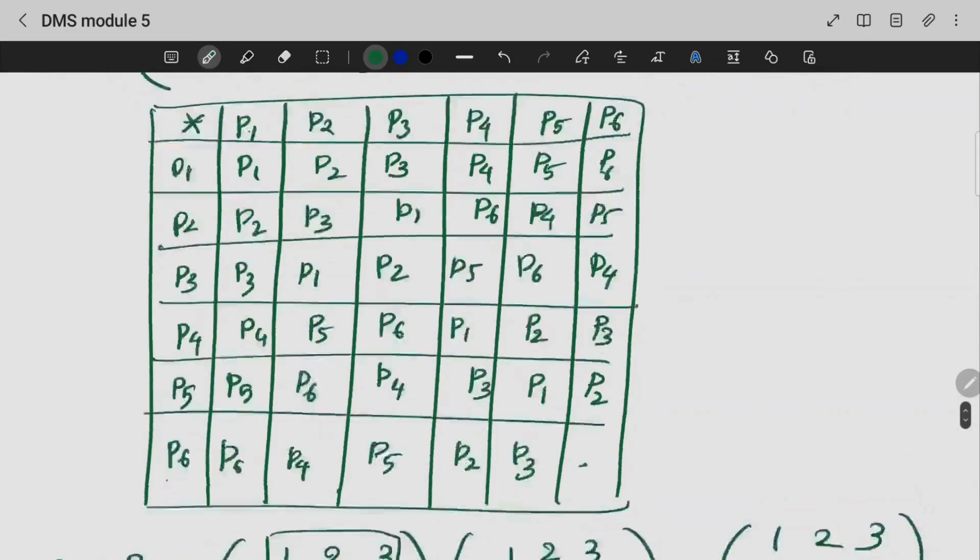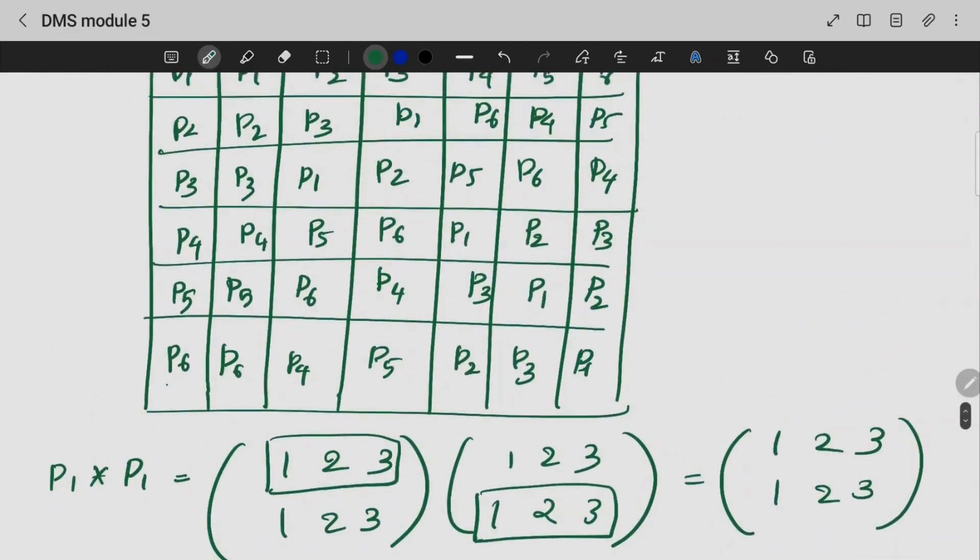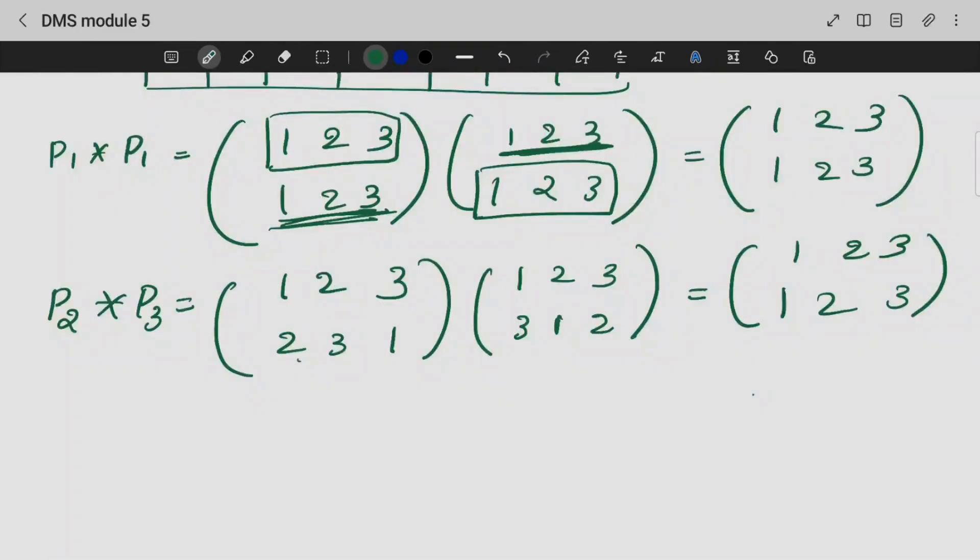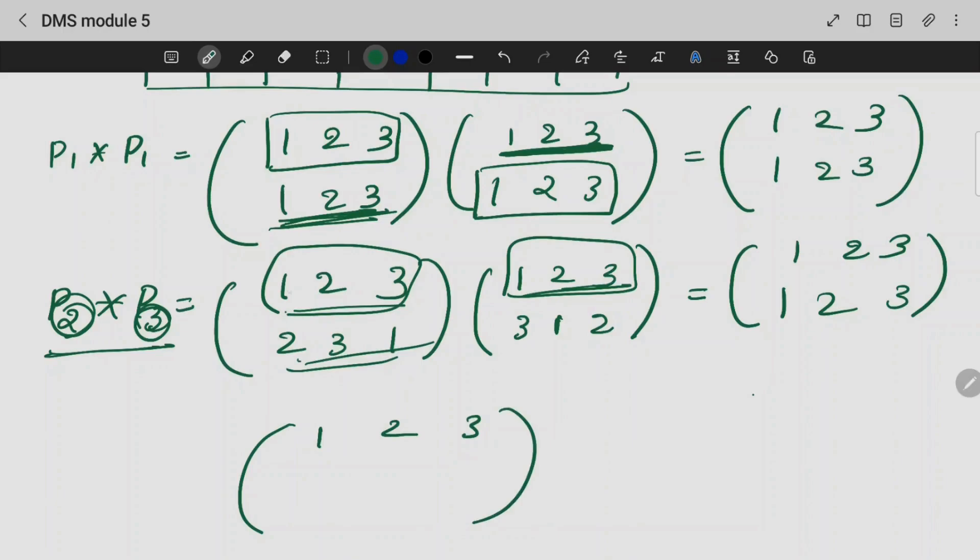For example, I am taking P2 and P3. We write the image as such. That is 1, 2, 3. 1 goes to 1, 2 goes to 3, 3 goes to 2. This is the multiplication function. So we are doing this permutation and multiplication function.